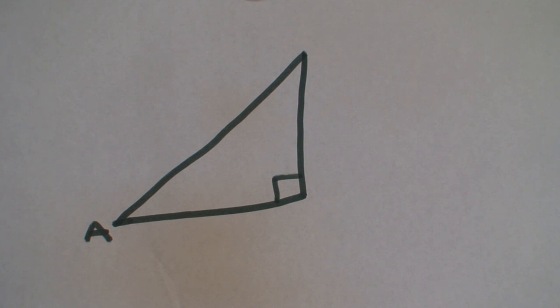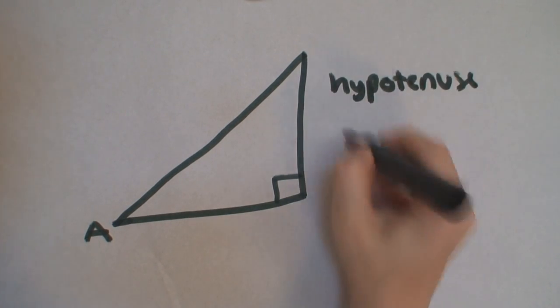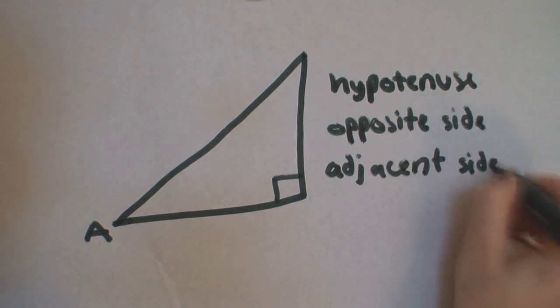So first, we need to understand the terms used in trigonometry. There are three types of sides in relation to the angle you are using. They're called the hypotenuse, the opposite side, and the adjacent side.